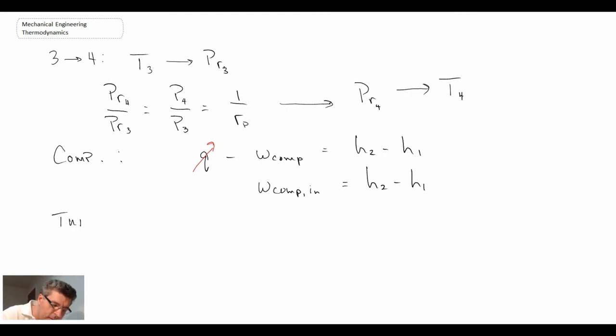And then for the turbine. Similarly the first law we can write out. Again there is no heat transfer in the turbine. So that disappears. Now this is work coming out. And we get that for the work from the turbine. So those are some of the equations.